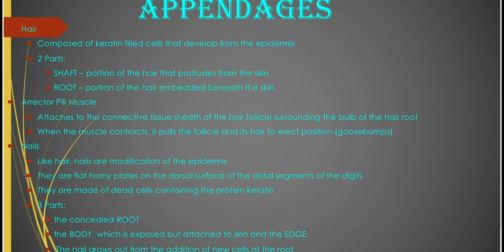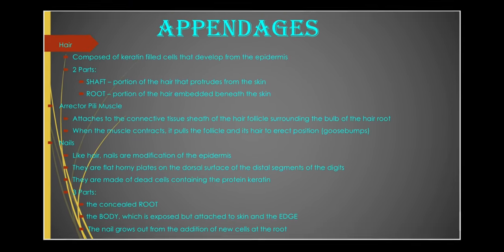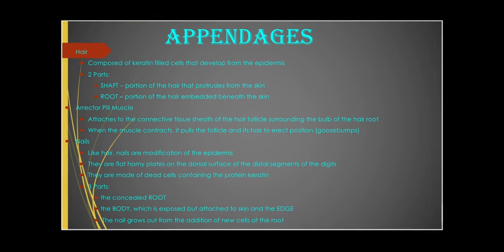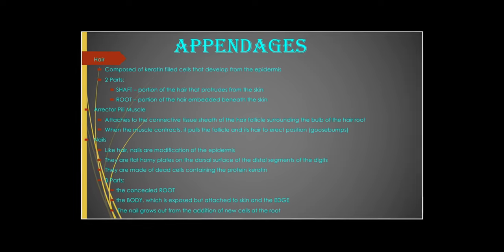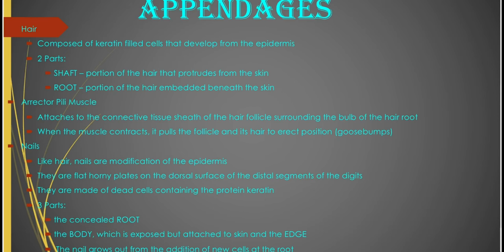There are other appendages on the skin of mammals. The hair is composed of keratin — cells that develop from the epidermis. There are two parts of the hair: the shaft, which is the portion that protrudes from the skin, and the root, the portion of the hair embedded beneath the skin. The erector pili muscle is also an appendage that attaches to the connective tissue sheet of the hair follicle surrounding the bulb of the hair. When the erector pili muscle contracts, it pulls the follicle and its hair to an erect position. This occurs in piloerection, and then we say you have goosebumps.